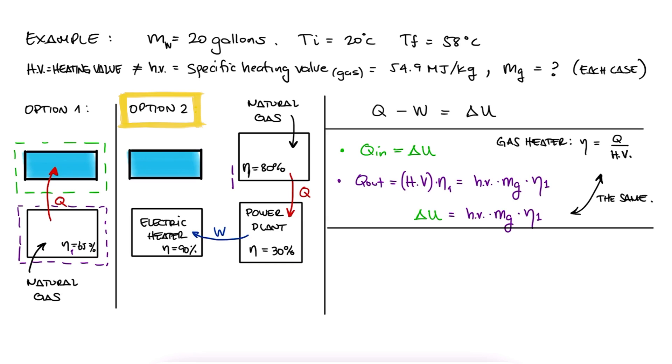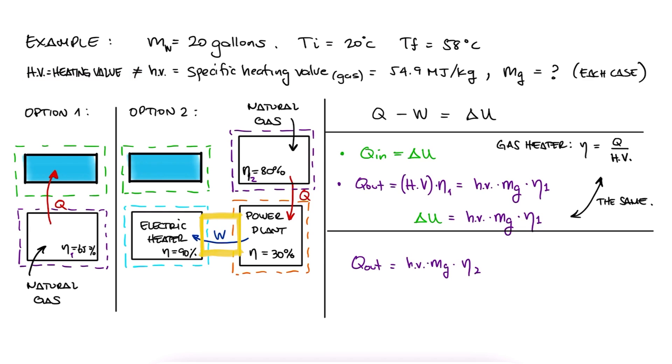Now, for the electric heater, we could split the entire process into three control volumes before reaching the water reservoir. The heat transferred out of the burner is equal to HV times the efficiency, no work. The electric energy or work coming out of the power plant is its efficiency times the heat coming in from the burner. And the heat coming out of the electric heater is its efficiency times that electric work coming in.